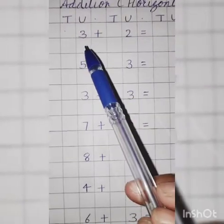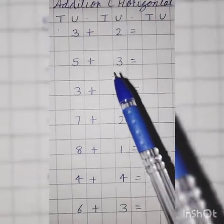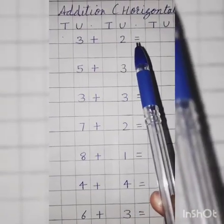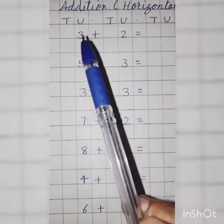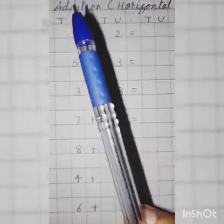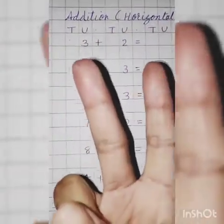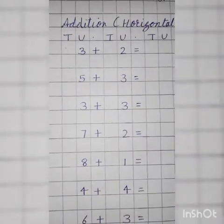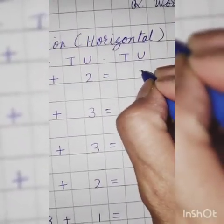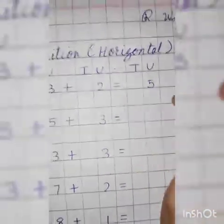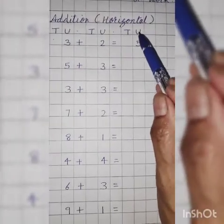Yes, write down 3 plus 2 equal to. 3 goes on head and 2 on finger. Hit the 3. What comes after 3? Yes, count. Very good. 4, 5. So, answer is 5. Write down under U because here we have only one digit. Now we have one digit. This is why we have U.